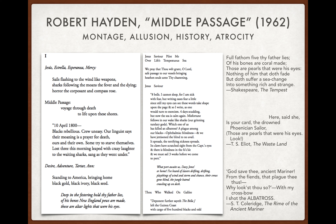Hayden is not expressing his personal view; his voice is rarely heard. Instead, most voices in the poem belong to white slave traders — excerpts from diaries and testimony — making the horror all the more powerful because it comes from those who created it. This is how dramatic monologues can work: a poet writes in the voice of unsympathetic characters who inadvertently reveal how unsympathetic they are.